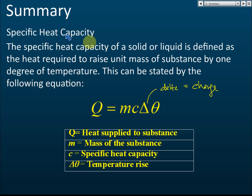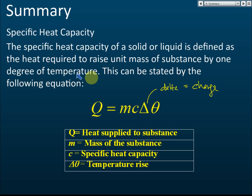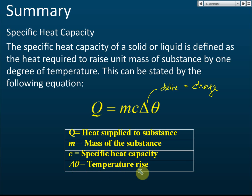In summary, the specific heat capacity of a solid or liquid is defined as the heat required to raise the temperature of a unit mass — that is, 1 kg — of a substance by 1 degree. It is expressed by the equation Q = mcΔθ, where Q is the heat supplied, c is the specific heat capacity, m is the mass, and Δθ is the temperature change.